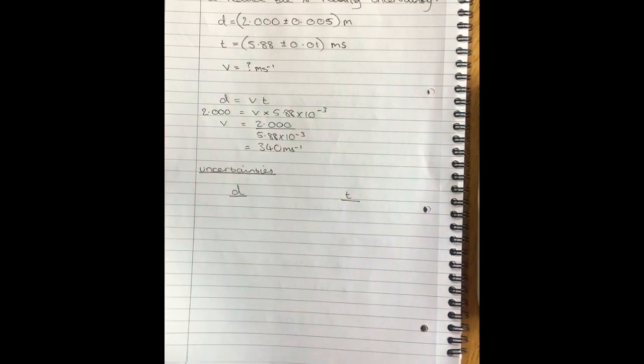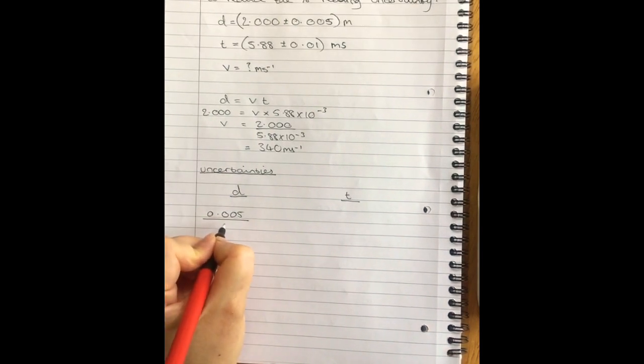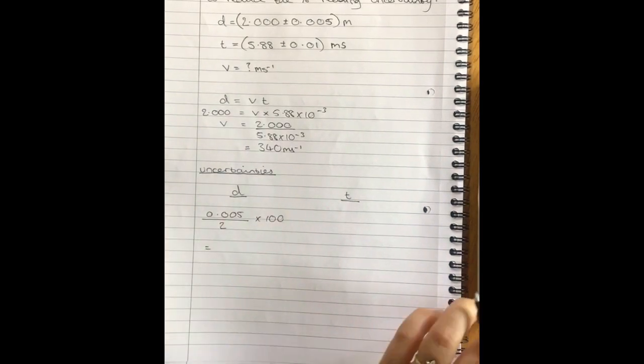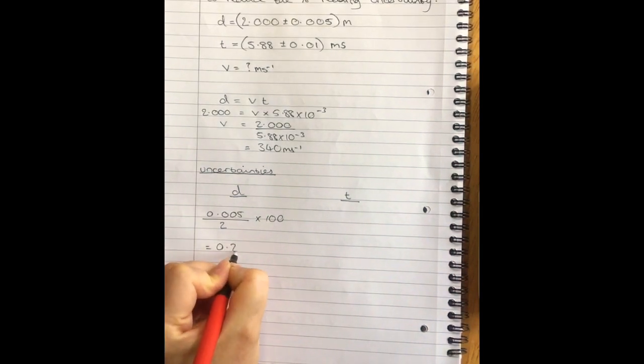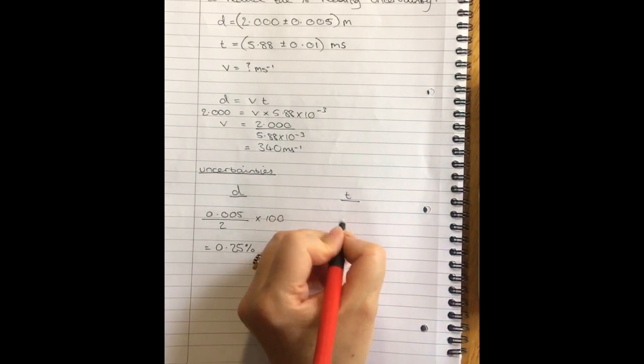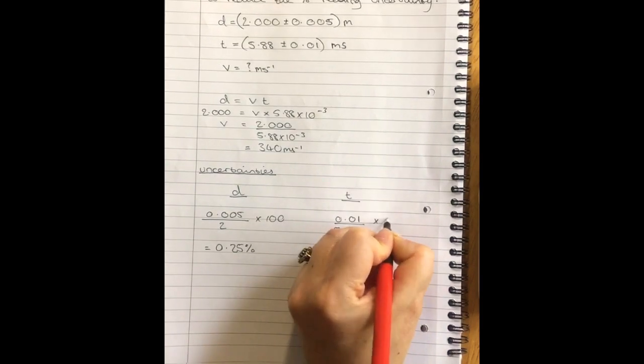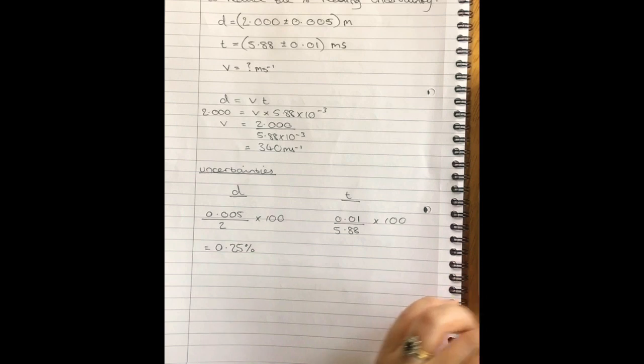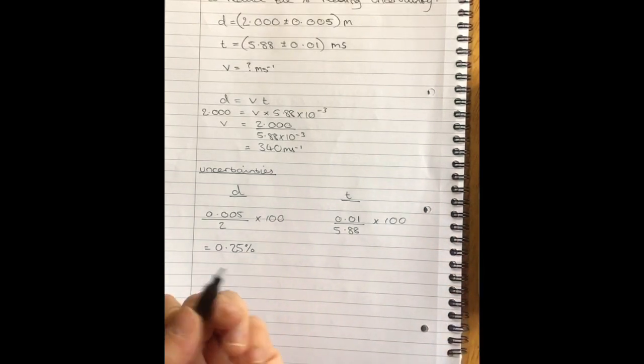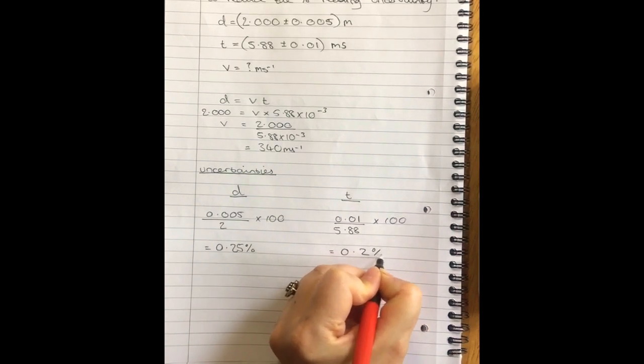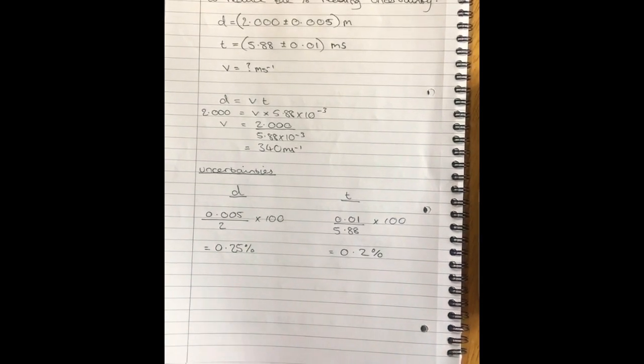So here I am just working through my calculation. I find my speed and now I'm going to find my percentage uncertainties, the times which are always what you're interested in in higher. So in the first one it was the time that really gave us the big uncertainty, let's see what we're getting now, 0.2%.